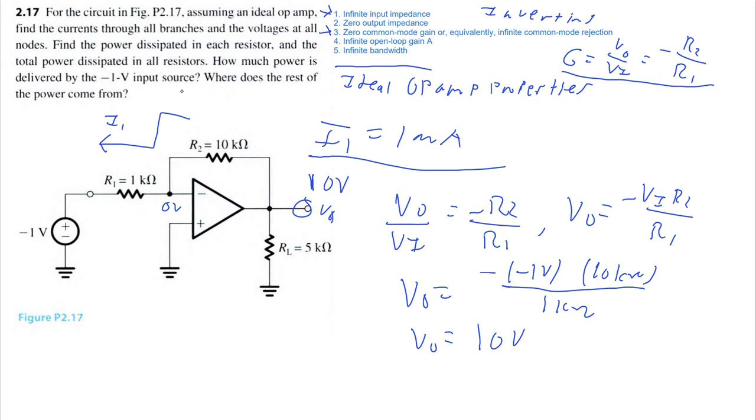And I want to point out that you can even double check that the current is still the same coming from this node and going across R2. Because again, you can calculate I2 is equal to 10 volts minus this node is 0 volts divided by 10 kilo ohms, which is equal to, once again, 1 milliamp.